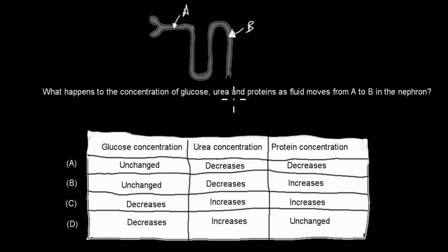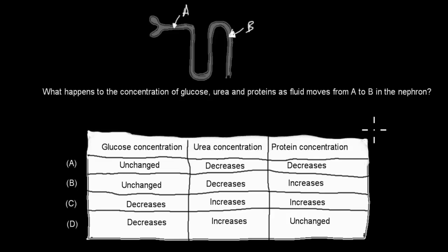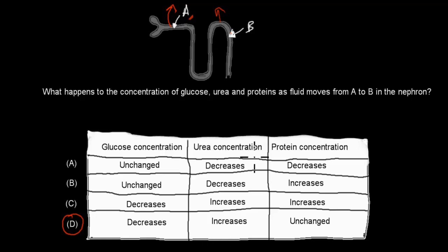Next: What happens to the concentration of glucose, urea, and proteins as fluid moves from A to B in the nephron? The correct answer is A: glucose decreases (it is reabsorbed back into the blood), urea concentration increases (because most other substances have been reabsorbed, leaving mostly urea), and protein is unchanged. Proteins never actually entered the nephron — they're always zero, since proteins are too large to filter through. Only smaller molecules like amino acids pass through.